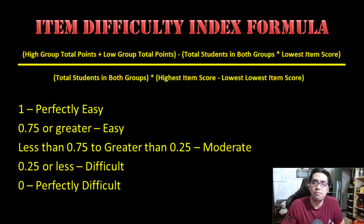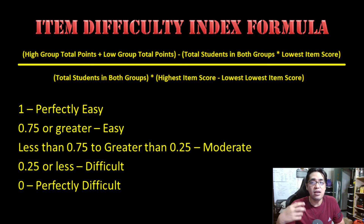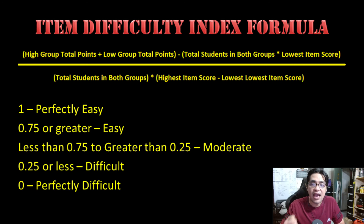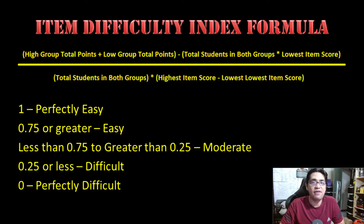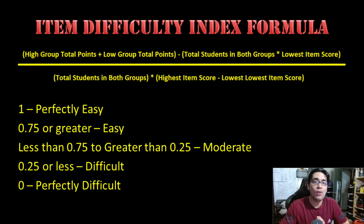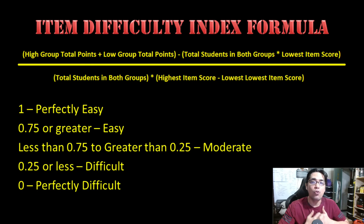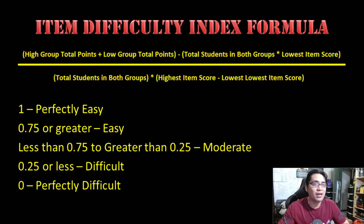Note that the higher the number, the easier the item. So if you have two items — one with an index of 0.6 and another with 0.4 — although both are moderately difficult, the item with 0.6 is the easier of the two. The easiest possible item has an index of 1, meaning all students in both groups answered correctly. The most difficult has an index of 0, meaning all students got it wrong. The sweet spot is 0.5, indicating perfectly moderate difficulty.